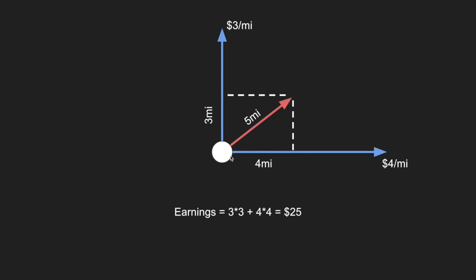Going back to the original numbers: I go four miles east and three miles north, and east makes me four dollars per mile while north makes me three dollars per mile. East is four-thirds as profitable as north, so I go in a direction such that I travel four-thirds times as far east as I go north. The general idea is that the amount of reward you get for a given direction tells you how fast you go in that direction.